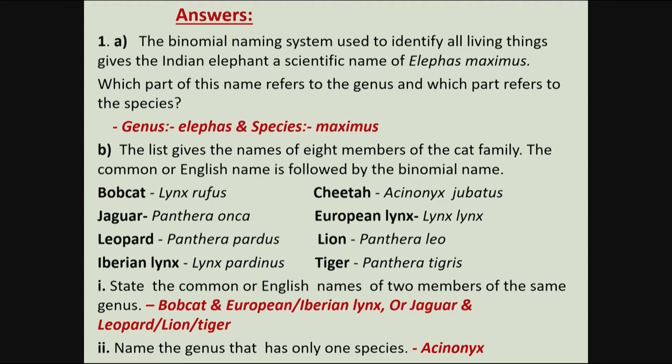In part B of the question, you were given the English names and scientific names of some organisms in the cat family, and asked to name two members of the same genus. You can say bobcat and European lynx, or European lynx and Iberian lynx, or jaguar and leopard, or jaguar and lion, or tiger and lion.